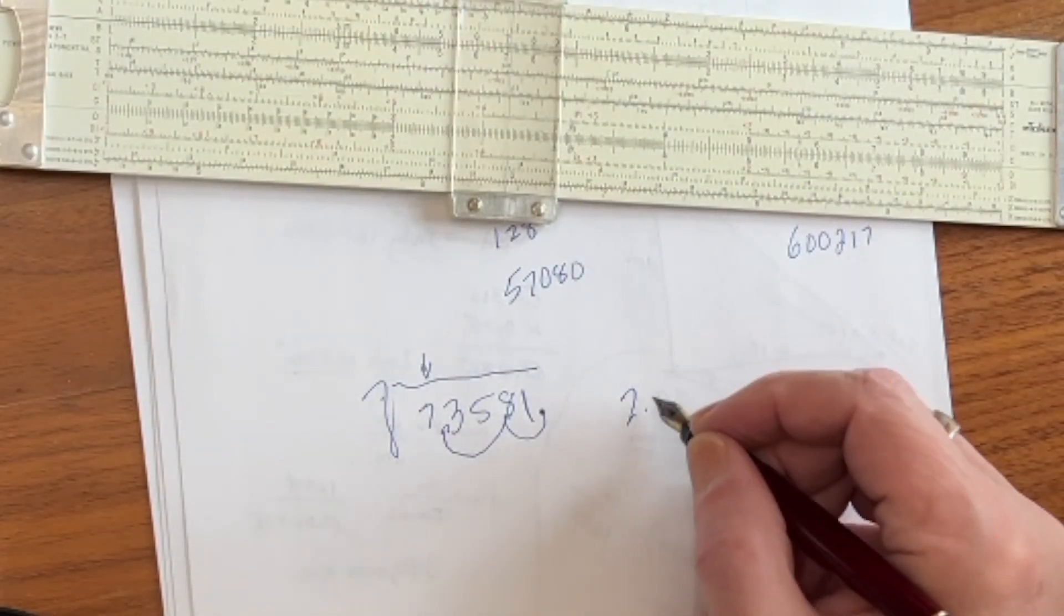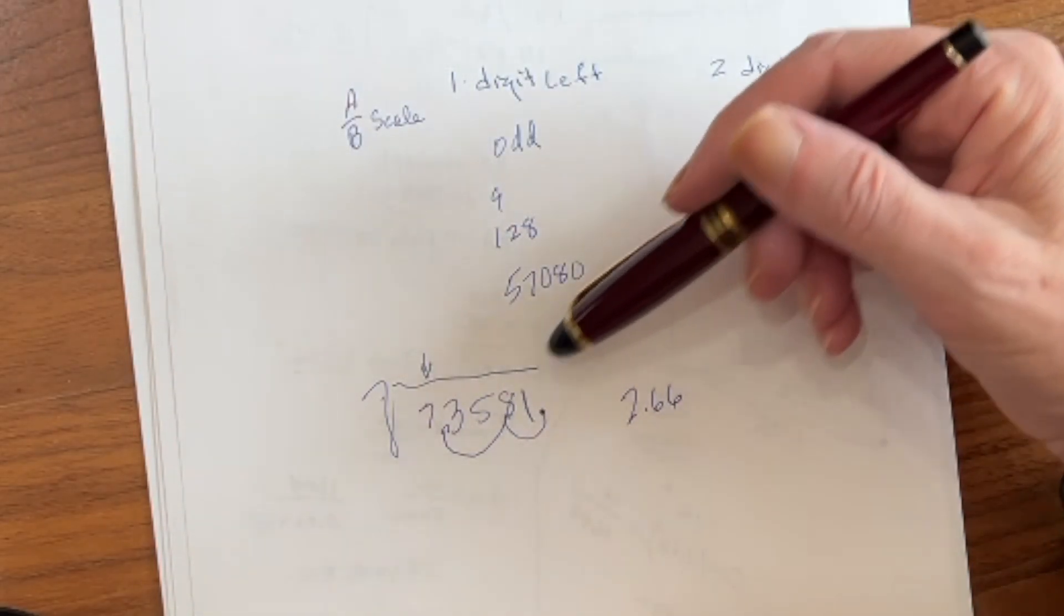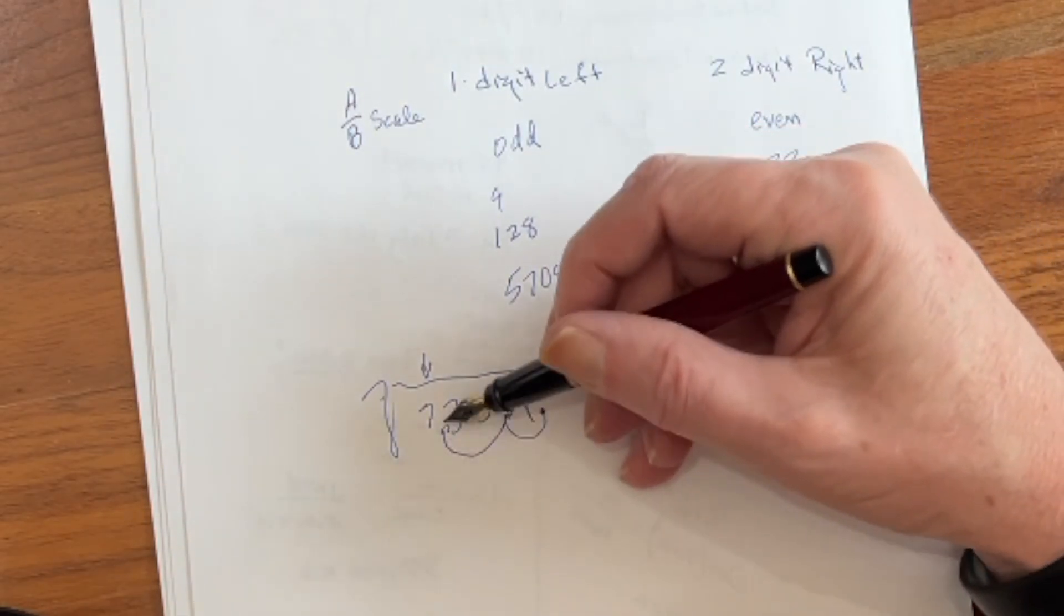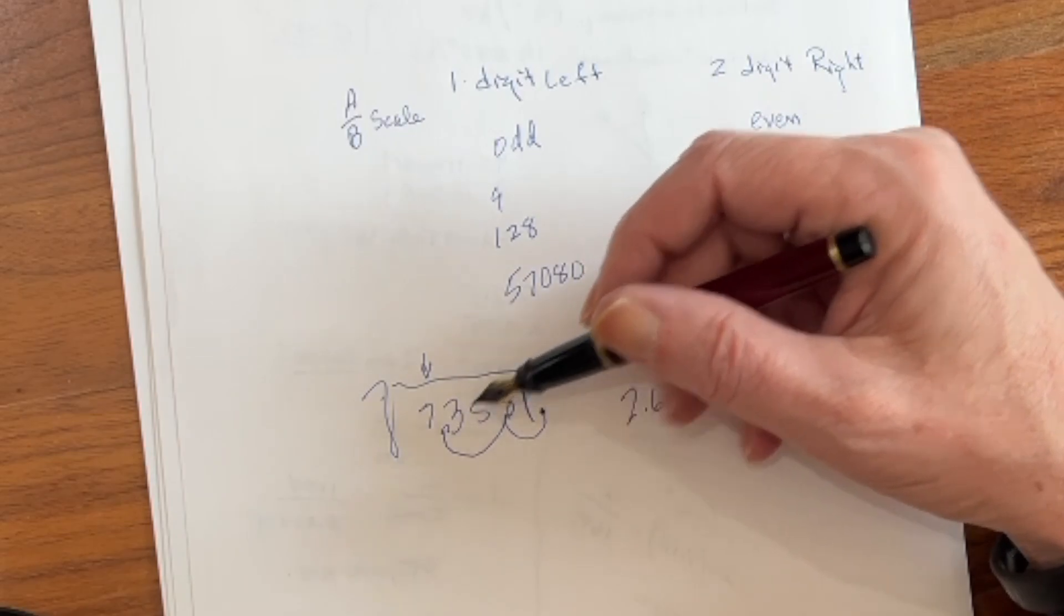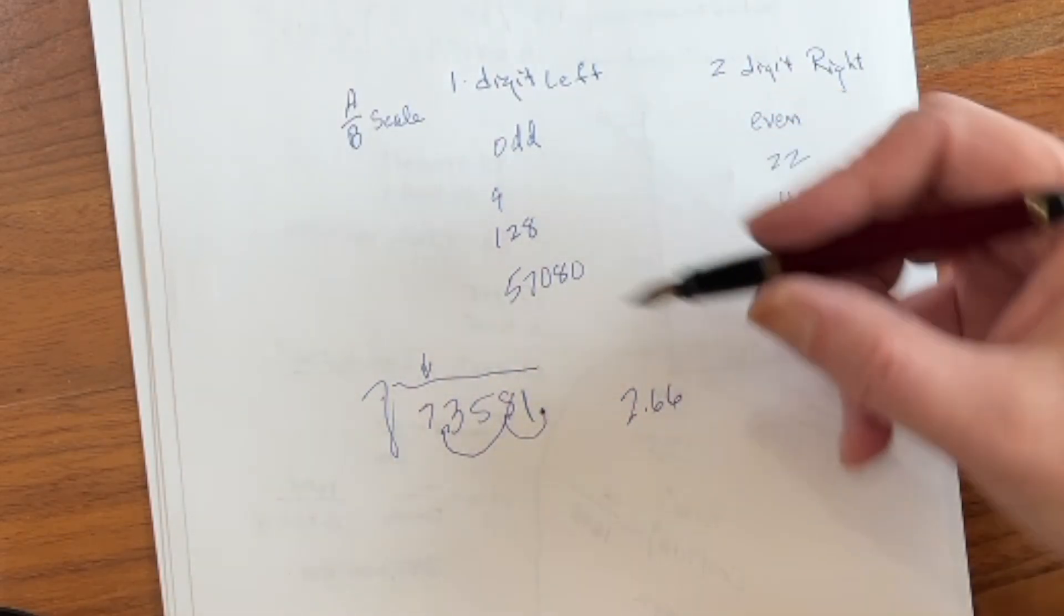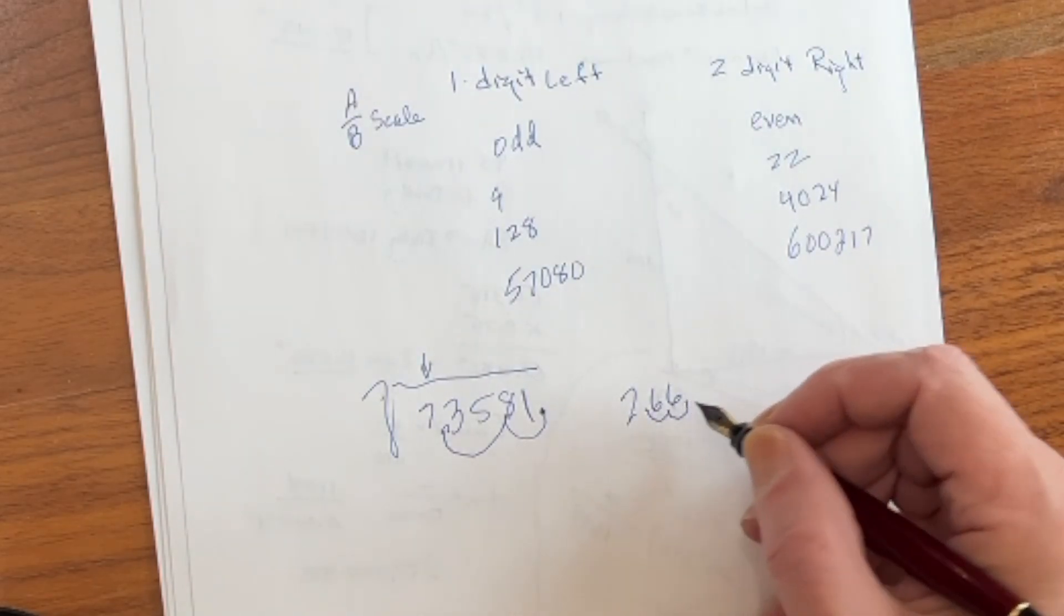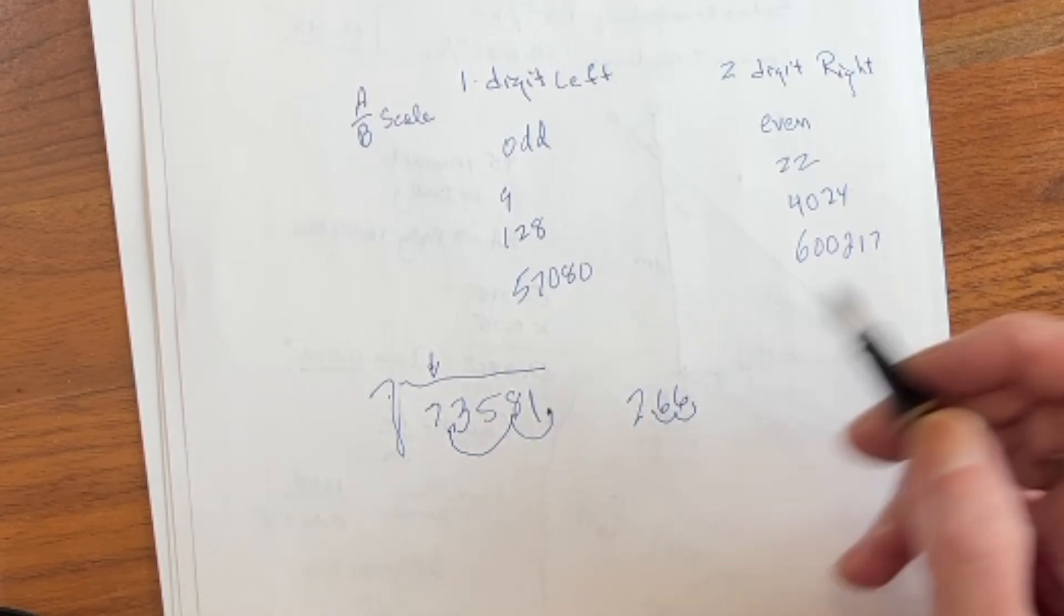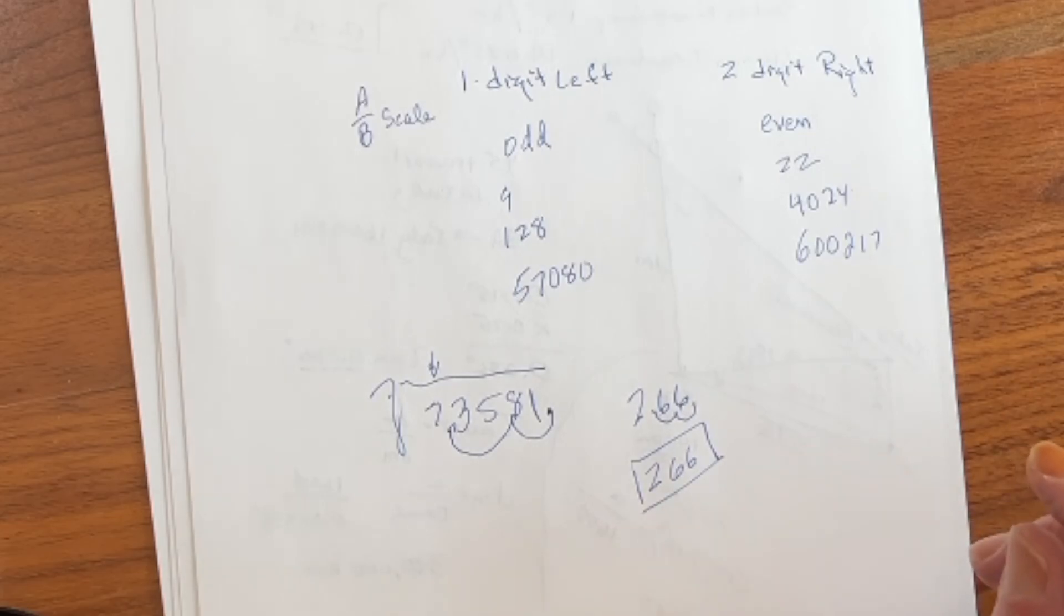So the answer is 2.66. Now the question is, where do we put the decimal place? Well, we had to move this over one two times. So what we need to do is we need to move it back half that number. So what we're going to do is we're going to move this back one, two. So we move it to the left two at a time. We move it back to the right one at a time. So our answer should be 266. Pretty neat trick, isn't it?